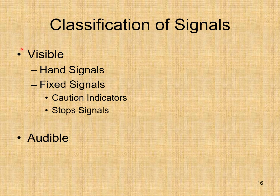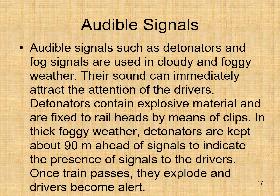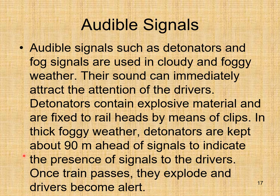Classification of signals: visible and audible. Under visible we have hand signals and fixed signals such as caution indicators and stop signals. Audible signals such as detonators and fog signals are used in cloudy and foggy weather — their sound immediately attracts the attention of drivers. Detonators contain explosive material and are fixed to rail heads by clips. In thick foggy weather, detonators are kept about 90 meters ahead of the signal; once a train passes, they explode and the driver becomes alert.